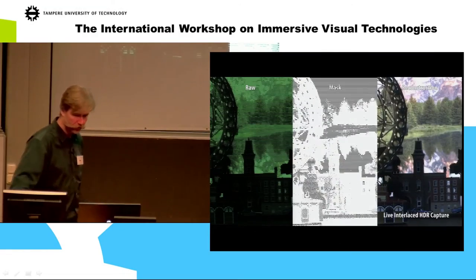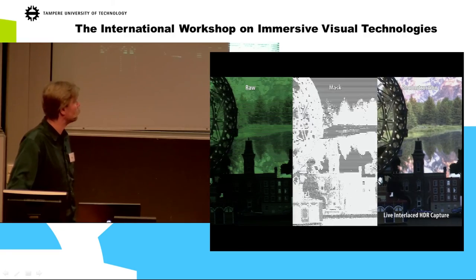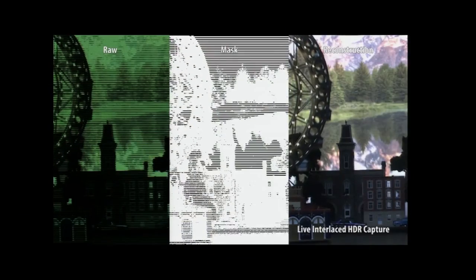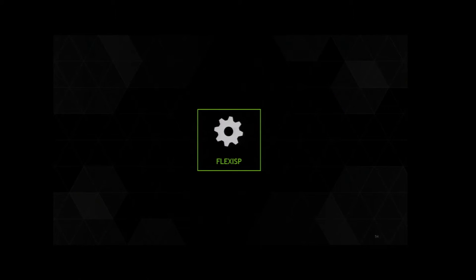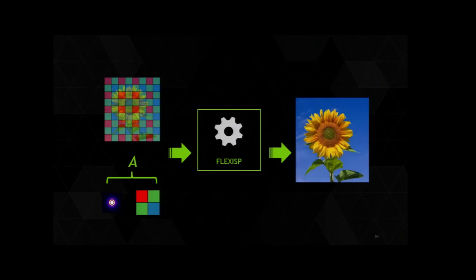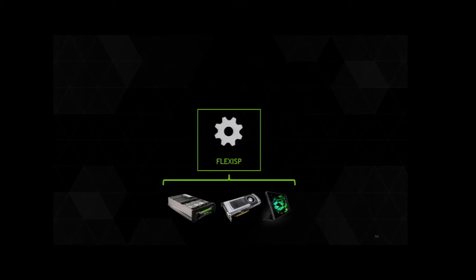We were able to run this in real time using desktop GPUs. In summary, the FlexISP framework takes images, understands how they are formed, and creates good images by running the optimization on GPU.